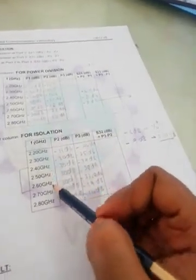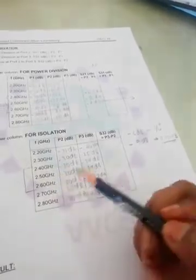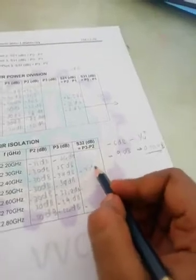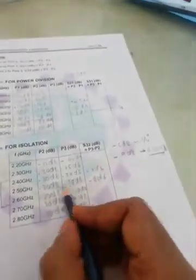I should obtain the isolation characteristic between among these three frequencies. If I take a difference here, it is minus seven dB, minus eight dB. The difference between P3 and P2 is minus three dB.